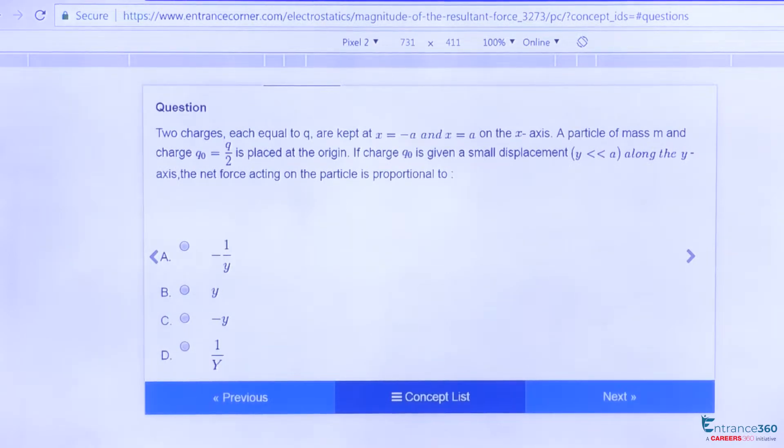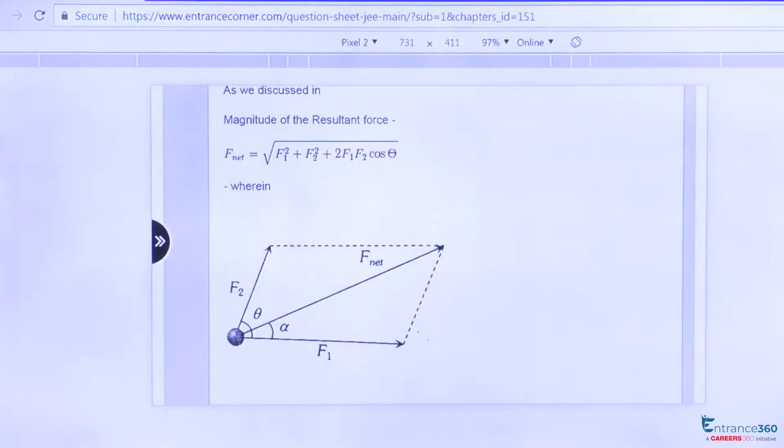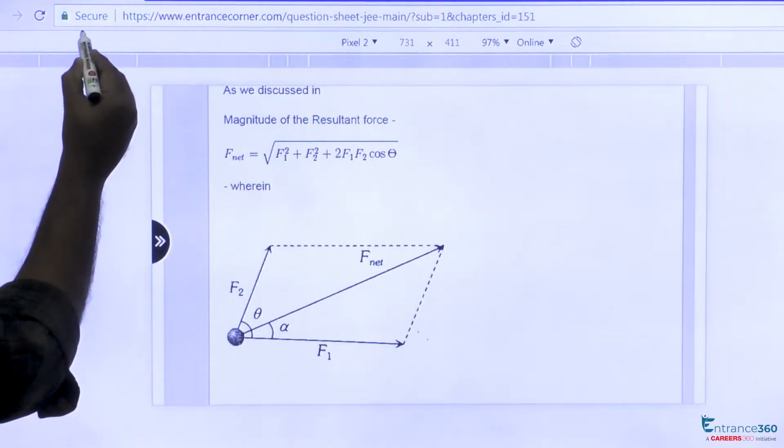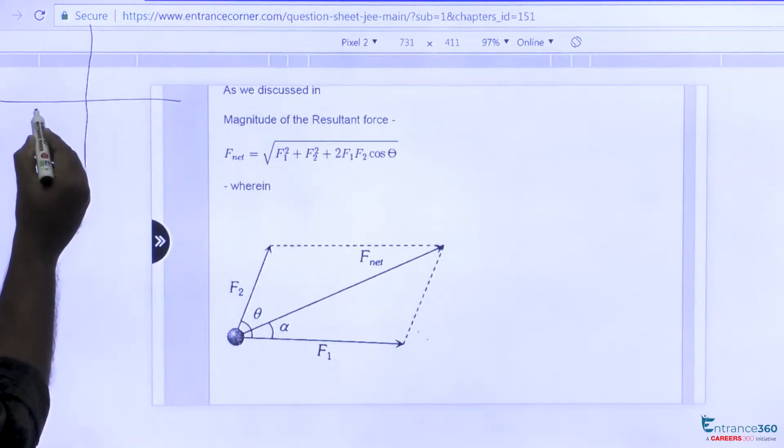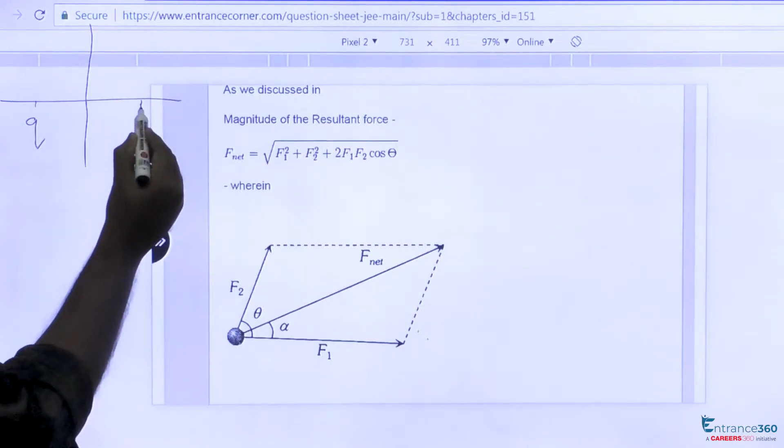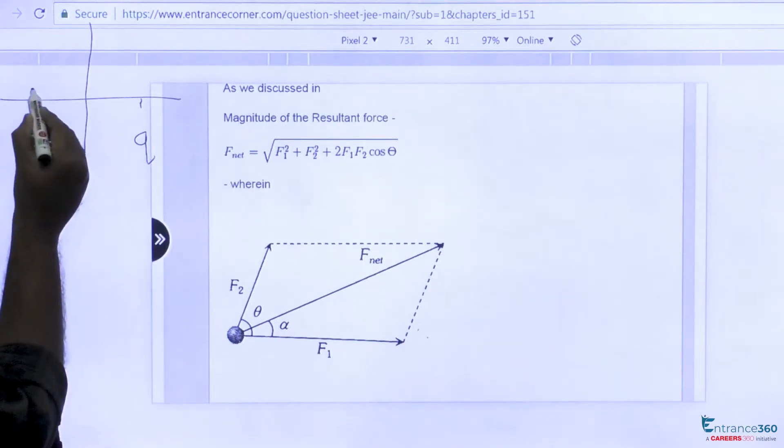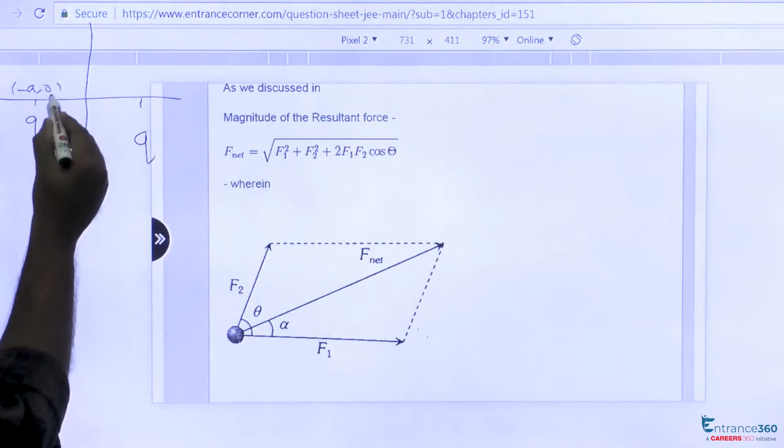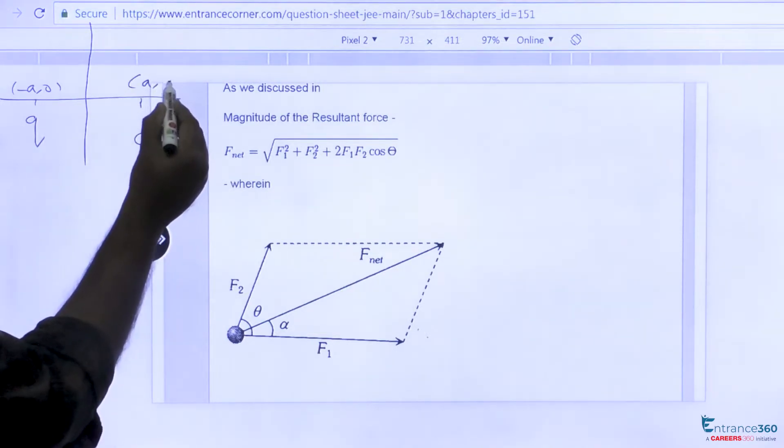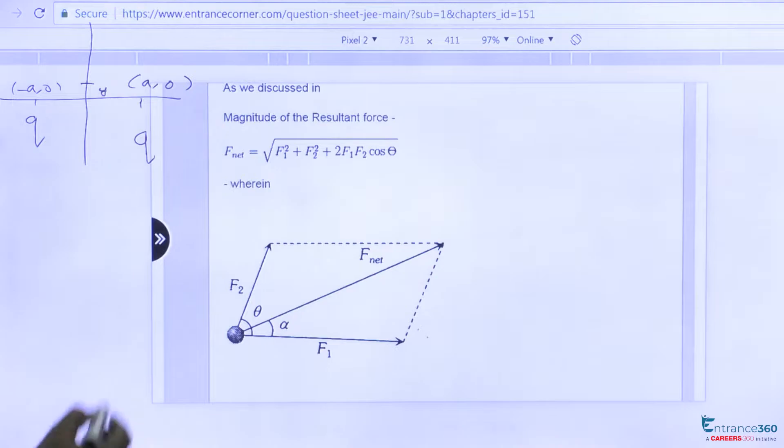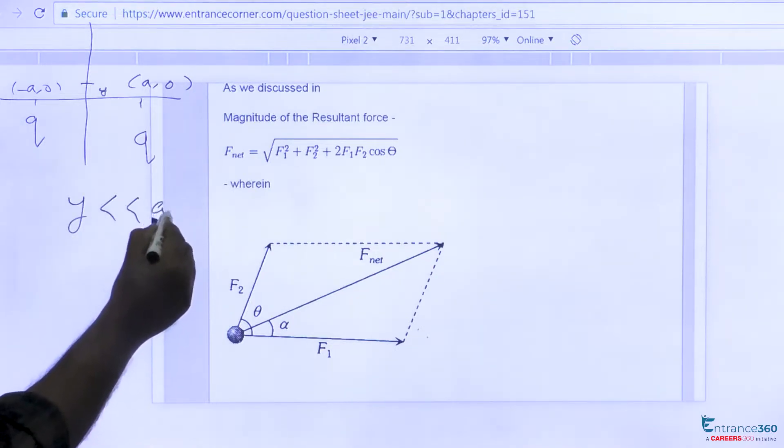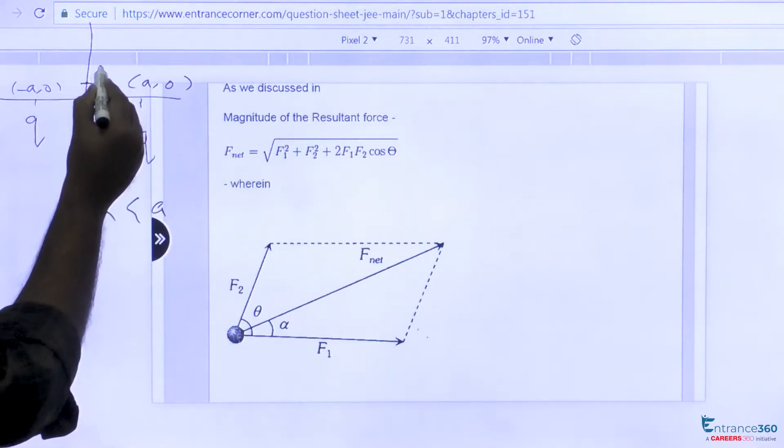So how to solve this question and what are the concepts used? As the question says, we have two charges q placed at -a and a. Another charge q/2 is placed at a distance y, which is very very less than a.